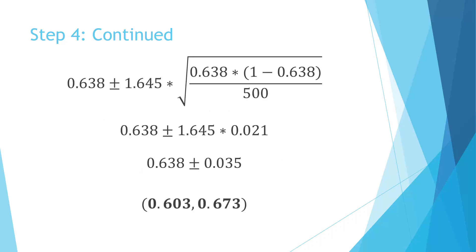Now that we know the z value of 1.645, we plug it into our confidence interval equation and have all values with no variables remaining. Following order of operations, I work from the innermost parentheses outward to the radical: first subtract 0.638 from 1, then multiply that by 0.638, then divide by 500, and finally take the square root. That value is 0.021. Next, I take 1.645 and multiply by 0.021, which gives us the value of 0.035.